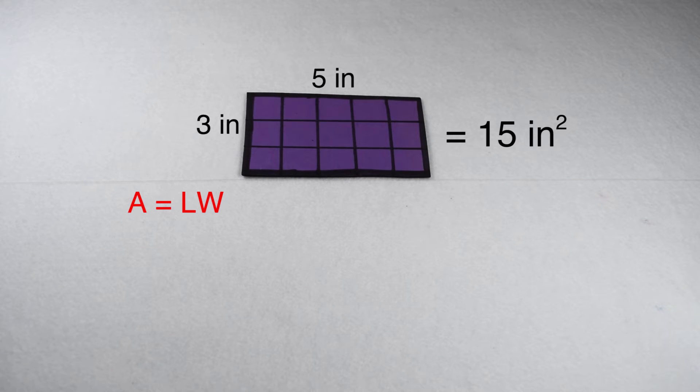It's important to always label your area in square units. We can use the exponent of 2 to abbreviate the squared part since area is a two-dimensional measurement.